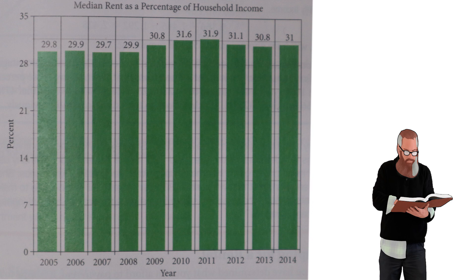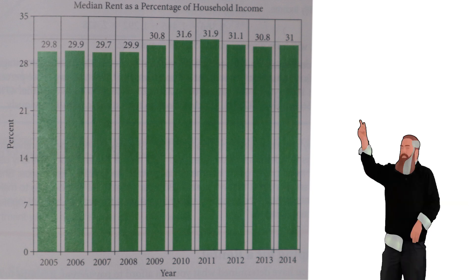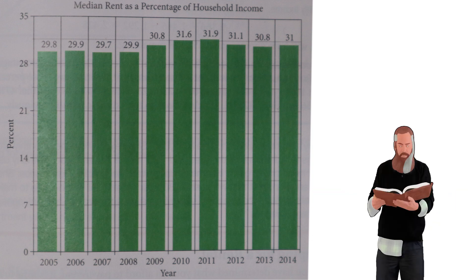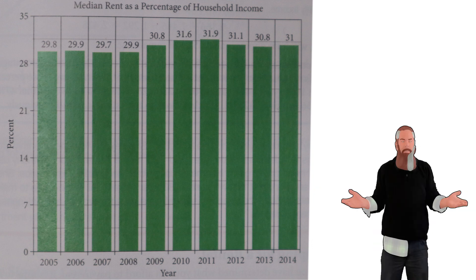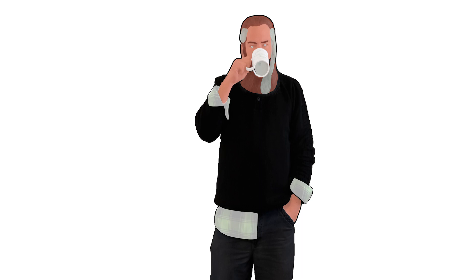The U.S. Census Bureau collects data on many aspects of American life. The following chart shows the average percentage of income spent on rent. From 1985 through 2000, that average was about 24.4%. Since the turn of the century, that percentage has risen. Experts recommend budgeting 25 to 30% of gross income for rent. Since 2005, renters have been at or above that upper bound. Recent reports indicate many renters in big cities are paying 40% or more of their household income for rent.